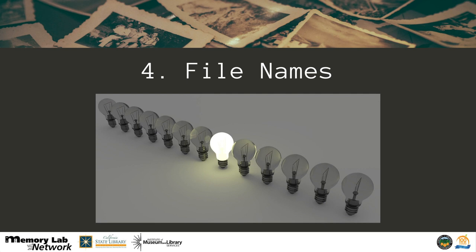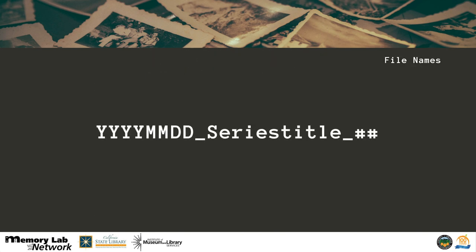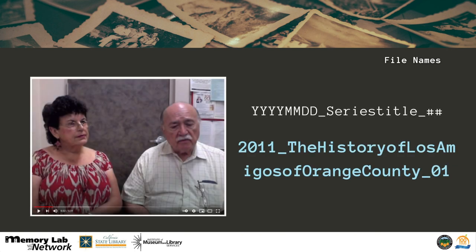File naming is important because you want to be able to locate your files. Again, this one is simple — there are two tips: be obvious and be consistent. Our recommended file naming convention for home movies is the same as for photos: four-digit year, two-digit month, two-digit day, underscore, series title, underscore, number in the series. Include as much information as you can. Here's an example: a video from 2011, The History of Los Amigos Orange County, number one. The file name should help paint a snapshot of when and what is going on, and the rest of the story is written in the file description.